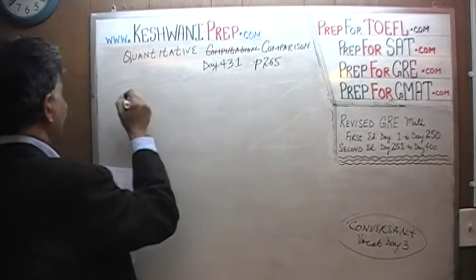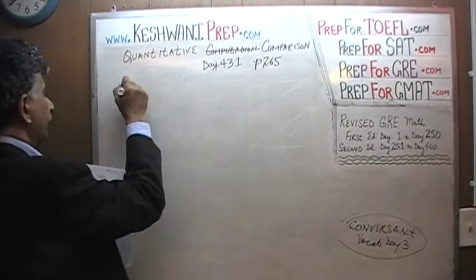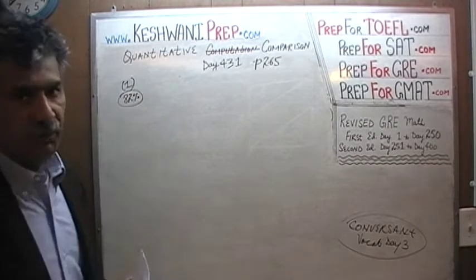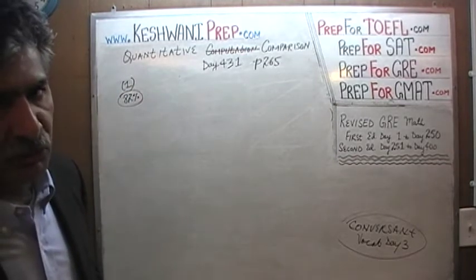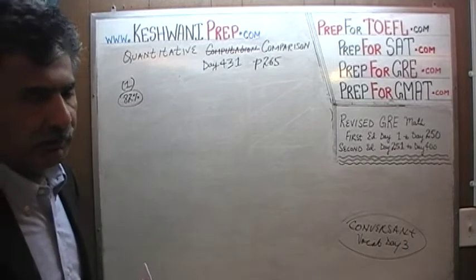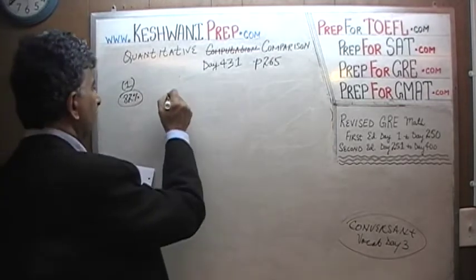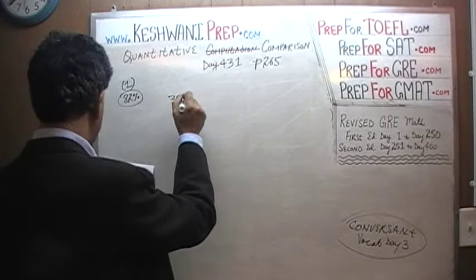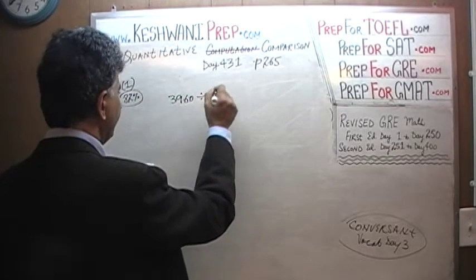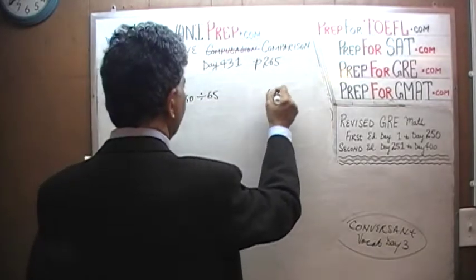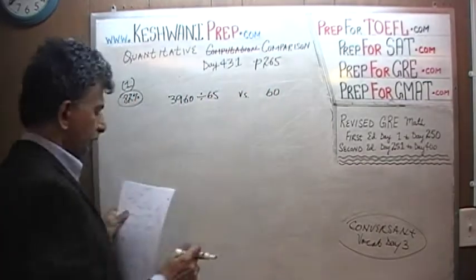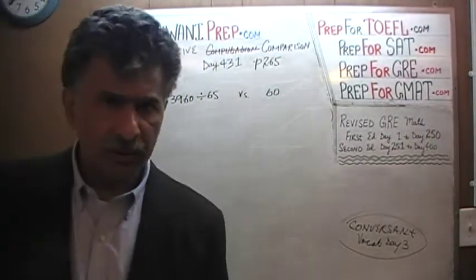Page number 265, question number 1. When it was given in the exam, 82% of the people had no trouble with it — only about a fifth of the people missed it. Here's the question: we are asked to compare 3960 divided by 65 versus 60. Column A versus column B. I want you to pause the video and do it without the calculator — doing it with the calculator, there's no point.